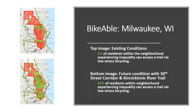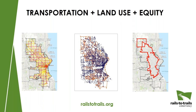The results show that only 8% of residences within the neighborhood experiencing inequality can access a trail by low-stress bicycle routes under existing conditions. However, once the 30th Street Corridor and the KK River Trail are created, a full 66% of residences within that same neighborhood can access a trail by low-stress biking. So completing these two projects will massively increase the connectivity of the community of concern to trails. This equity-focused multimodal connectivity analysis lets us show real-world effects of getting people access to infrastructure that will make them healthier and stitch communities together — embedding an equity argument, land use argument, transportation argument, and health argument into a single analysis.